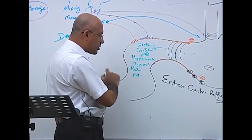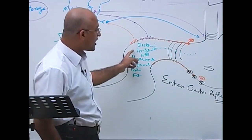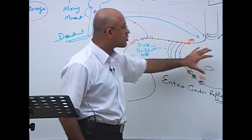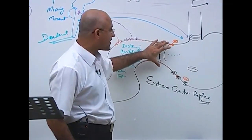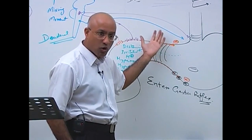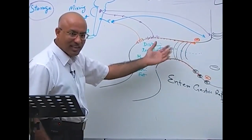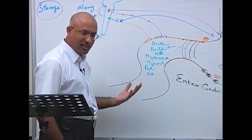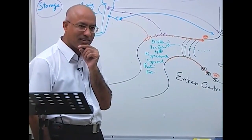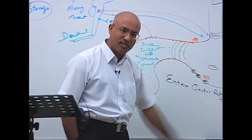To summarize, the stimuli that activate the enterogastric reflex include: distension, irritation, high acidity, hypertonic or hypotonic chyme, and partially digested protein or fat. These activate local myenteric reflexes, reflexes through the sympathetic ganglion, or vago-vagal reflexes — all of which slow stomach movement and tighten the pylorus so that stomach emptying becomes slow.